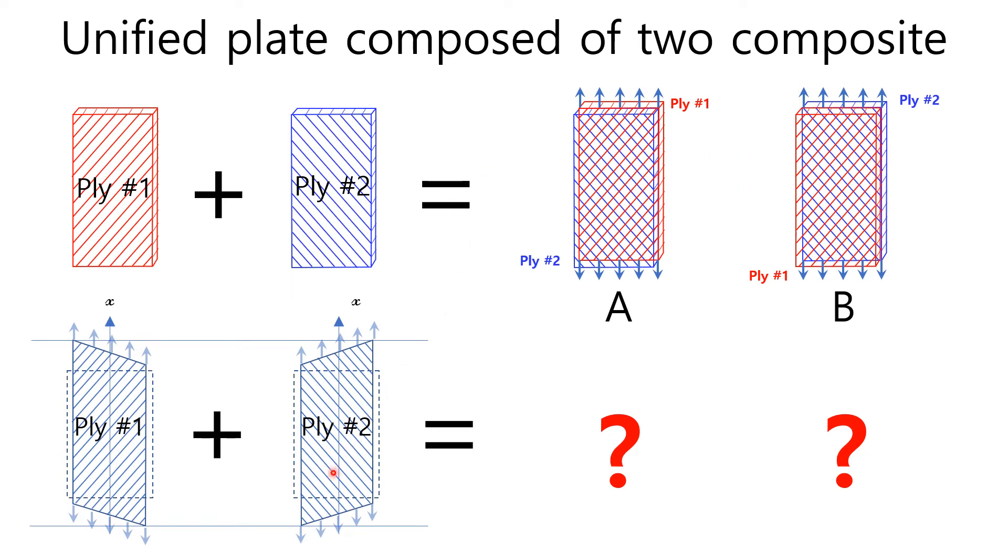As illustrated in the previous slide, we have already known that the composite plate with steel cord at angle deforms to skewed parallelogram shapes. Now, what will be the deformation shape per the unified plates composed of two composite plates with cord angle opposite to each other respectively in this picture?